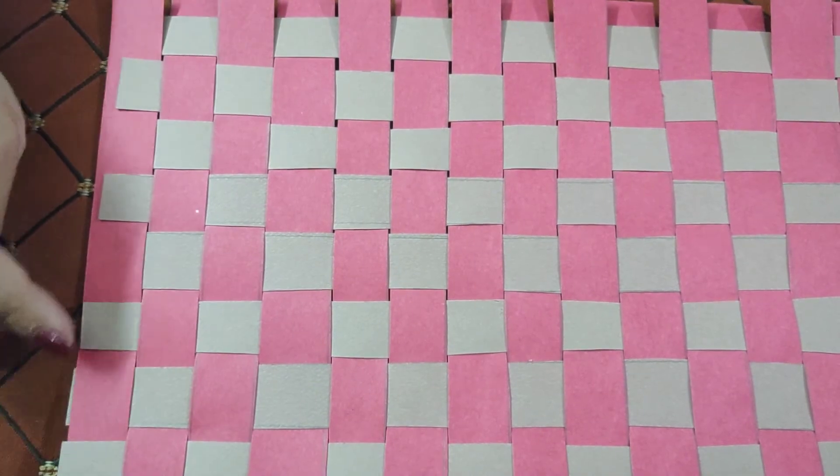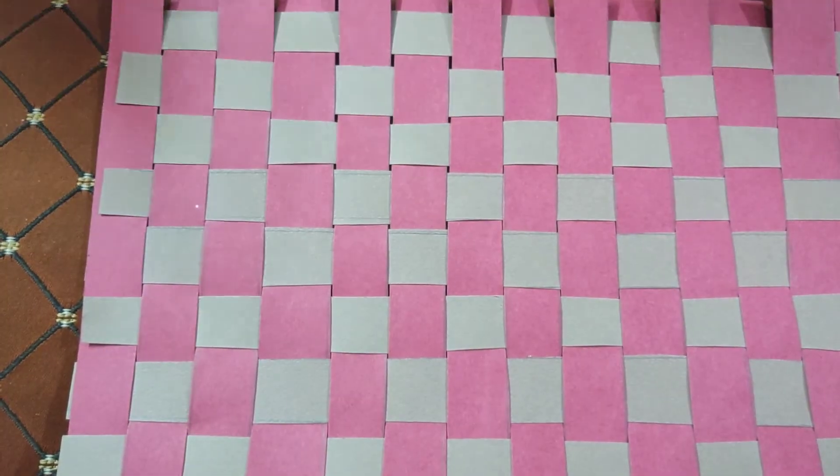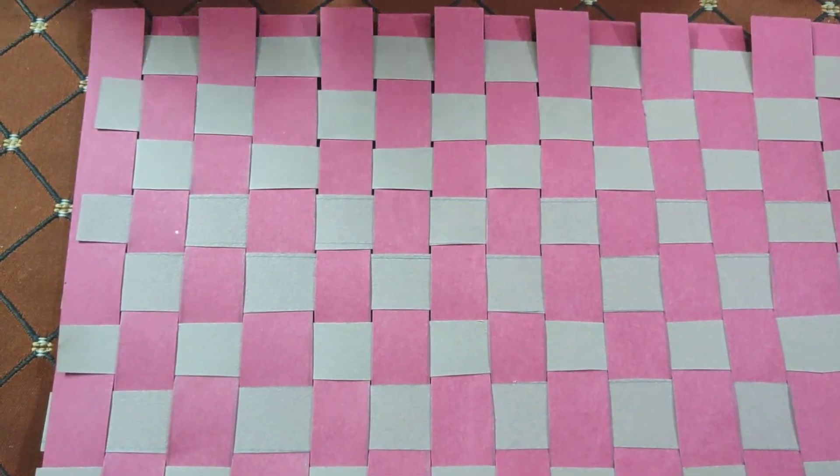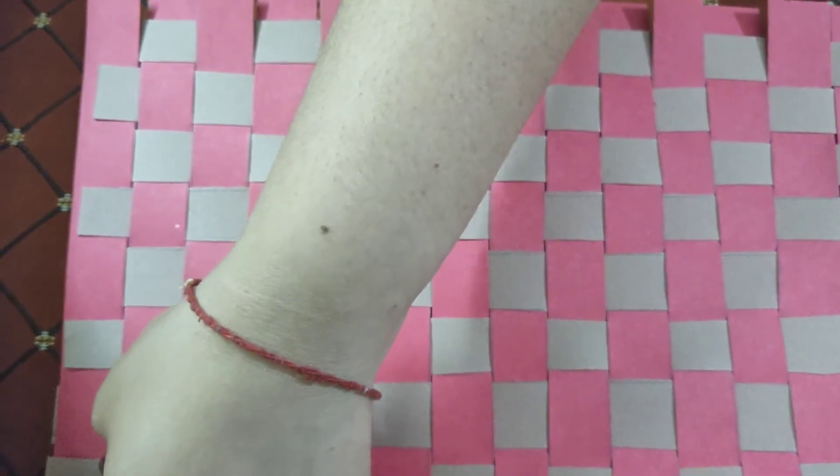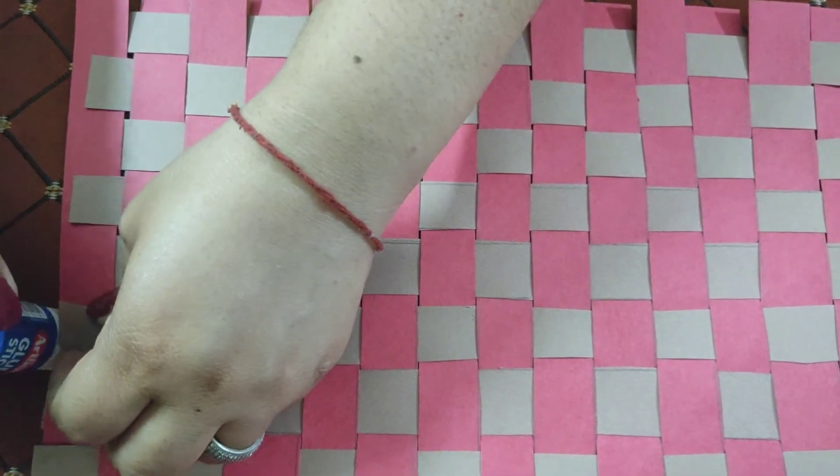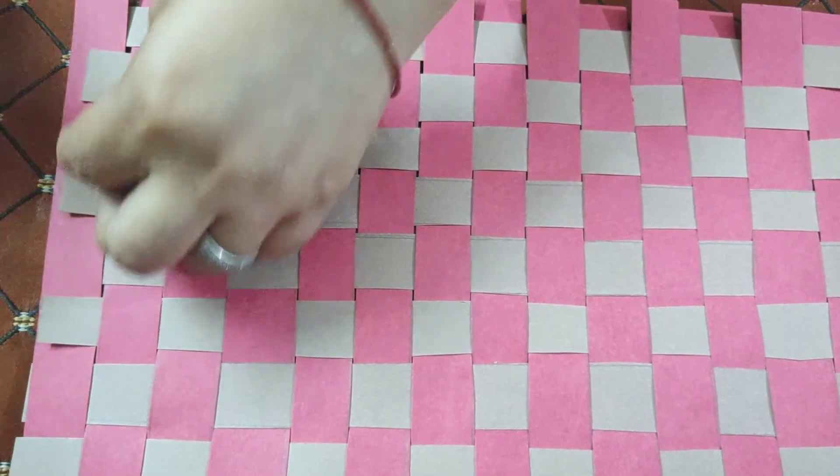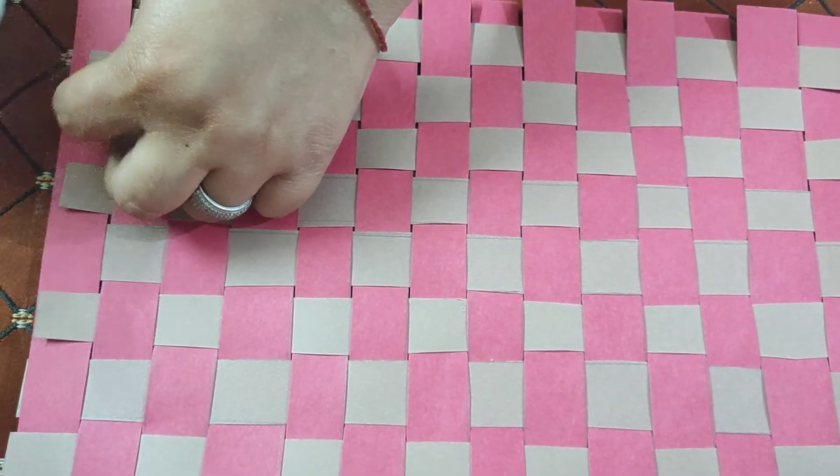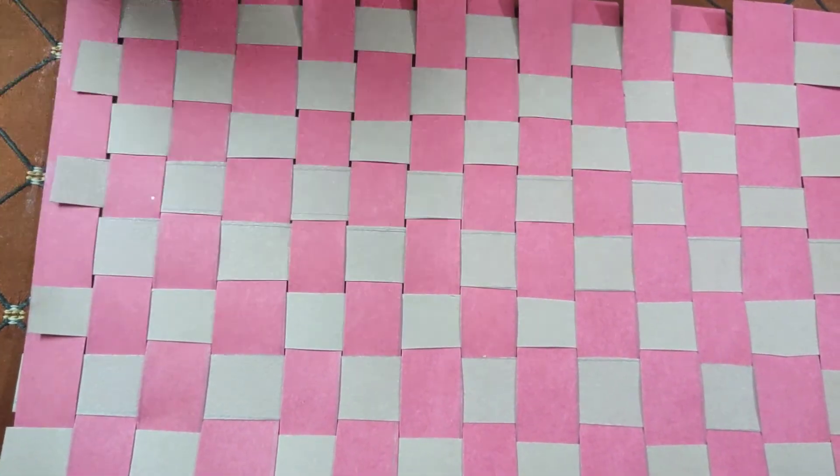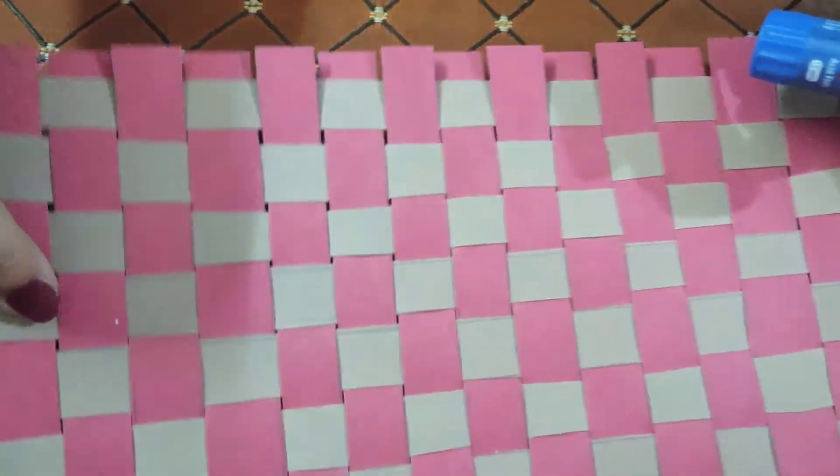Now using glue or fevicol, we will seal the edges. You can even turn over the project and apply glue so that all the strips are completely stuck in place nicely.